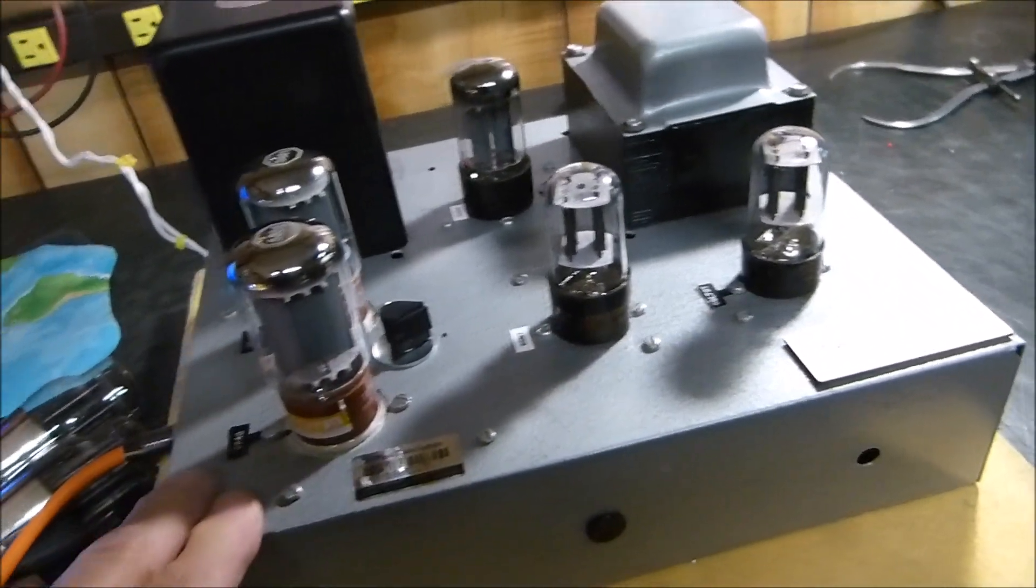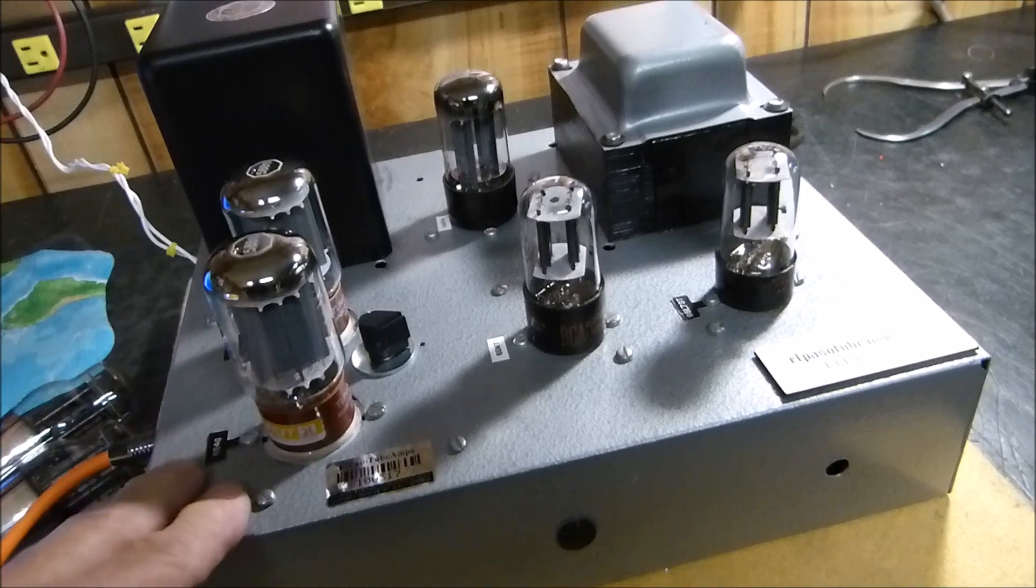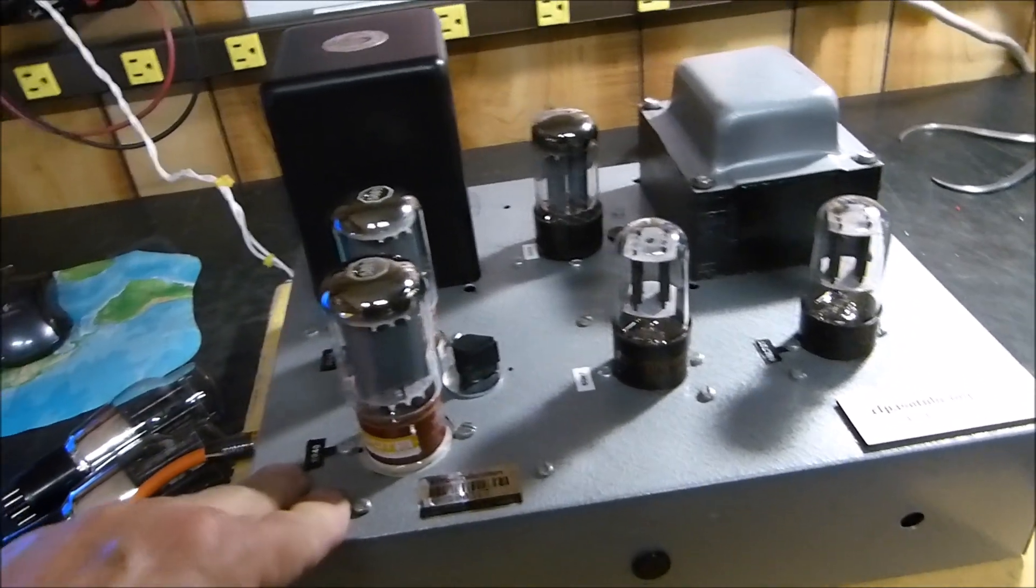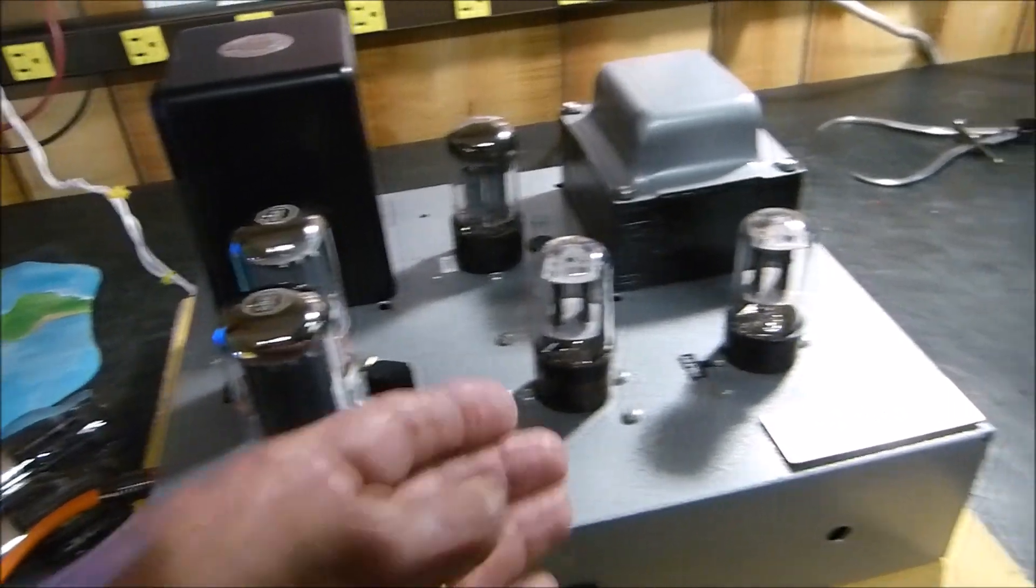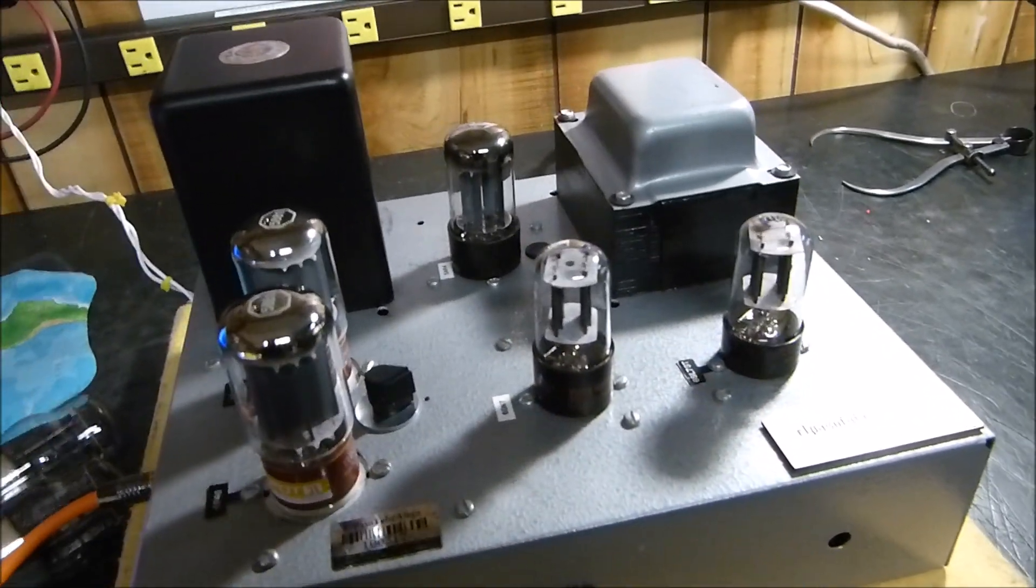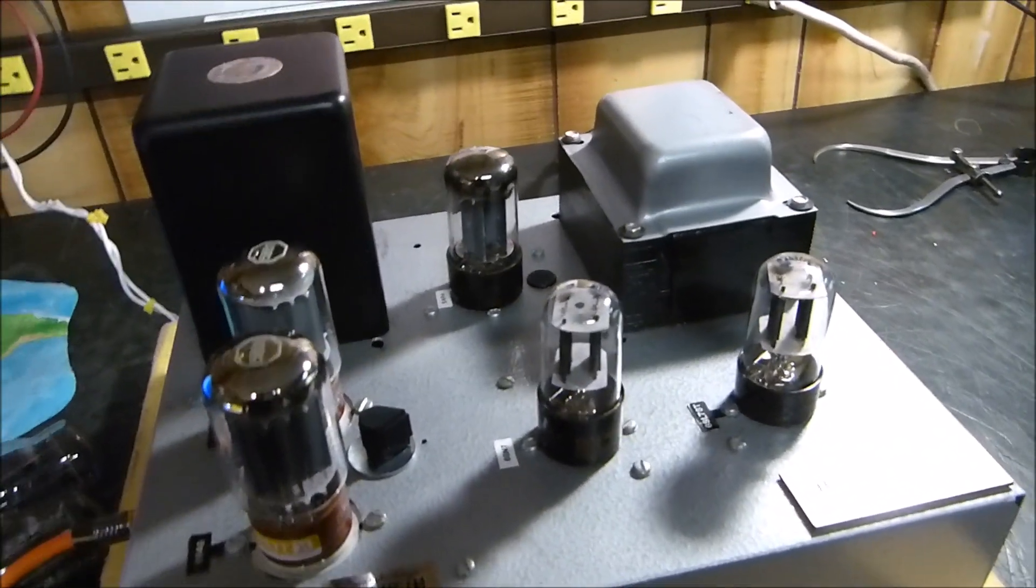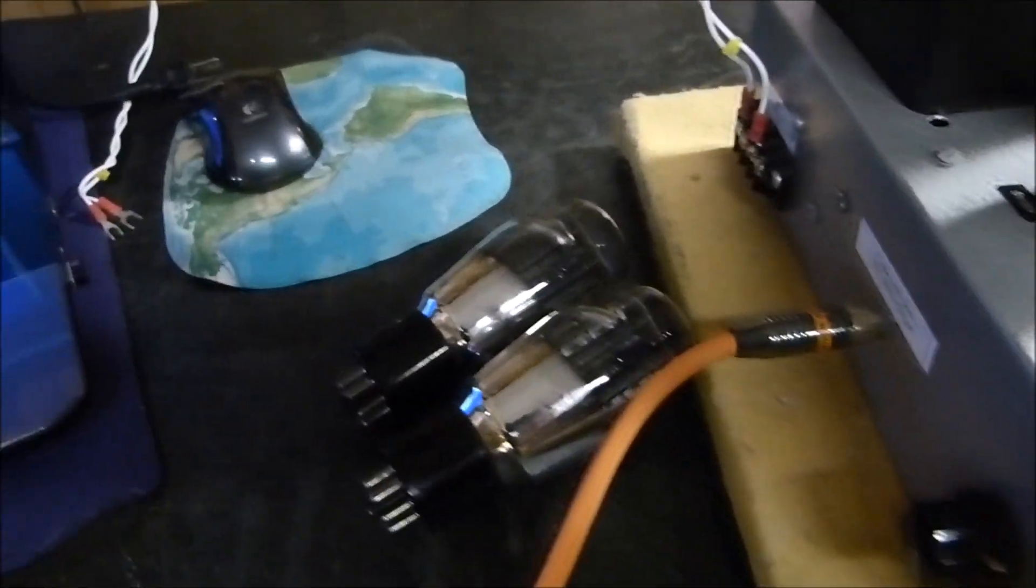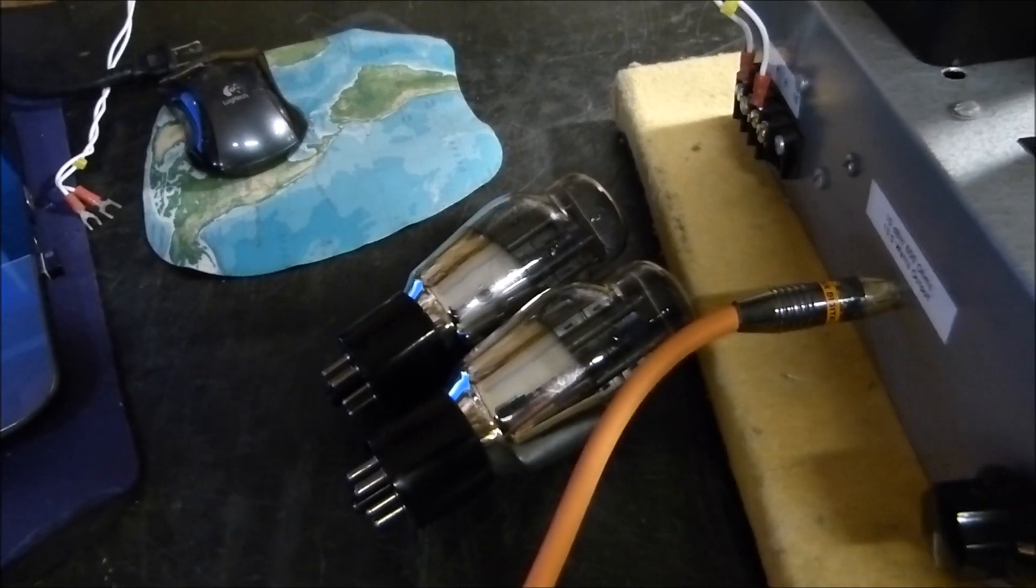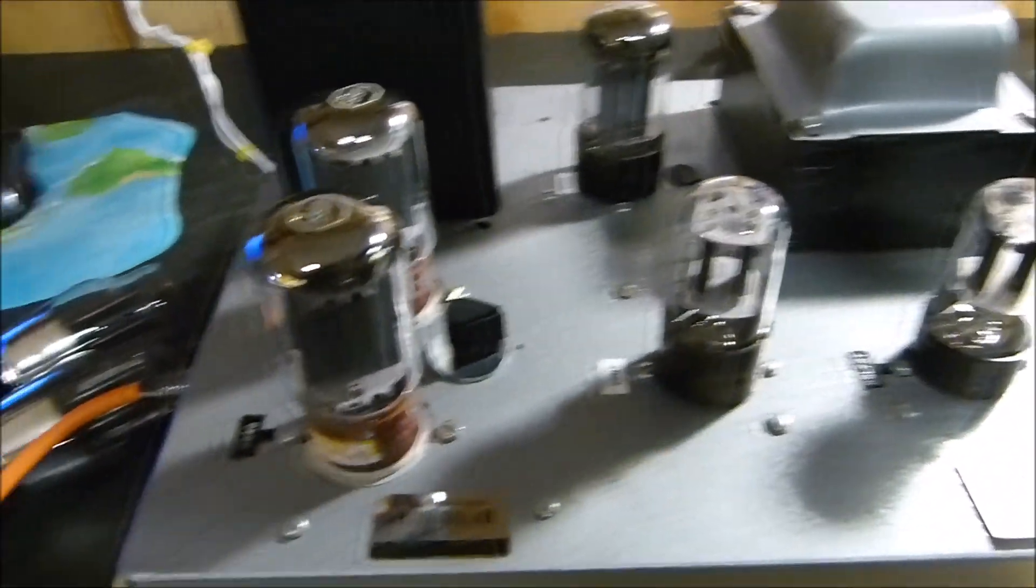I can simply pull these two out and put these two in with no changes, so I can have the standard Acrosound Williamson style amplifier with beam power pentodes and the 5U4 or 5AR4 rectifier, or I can pull them out and make it a directly heated cathode pure triode amplifier.